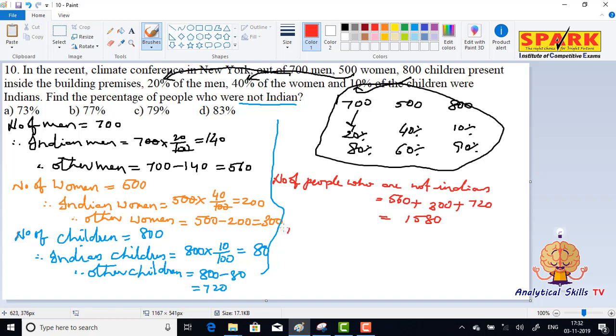Total persons equal to 700 plus 500 plus 800, and that is 2000.